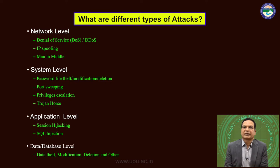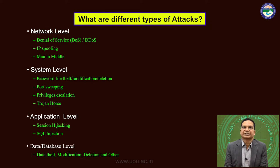Some attacks at the system level are password file theft, modification, deletion, port sweeping, privilege escalation, and trojan horse — these all come under the system domain. At the application level there are session hijacking, SQL injection, broken authentication, and broken session management. At the data and database level there is data theft, modification, deletion, and many others. These are all different types of attacks to be considered under various layers of an IT system in a networked environment.